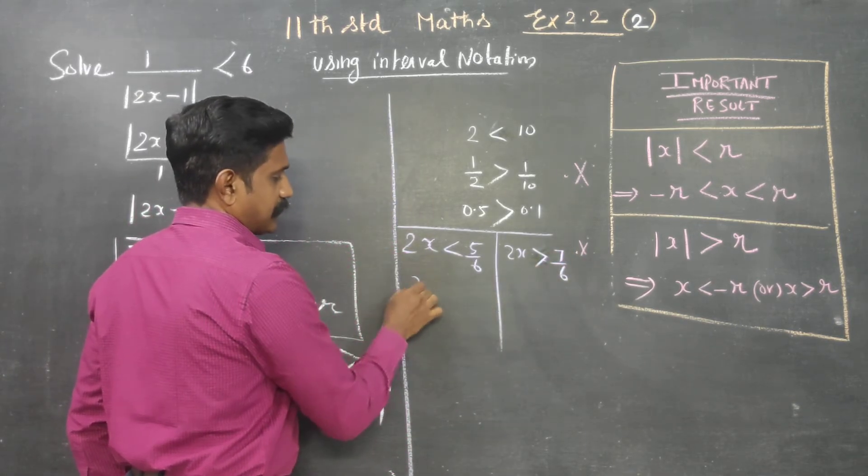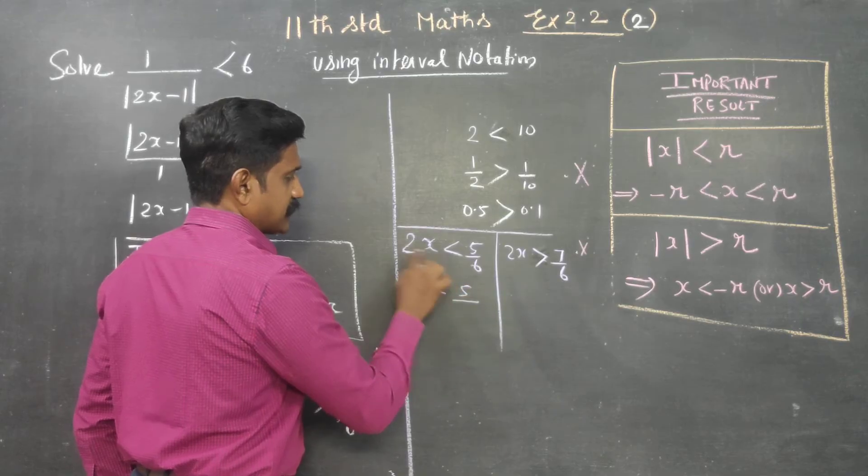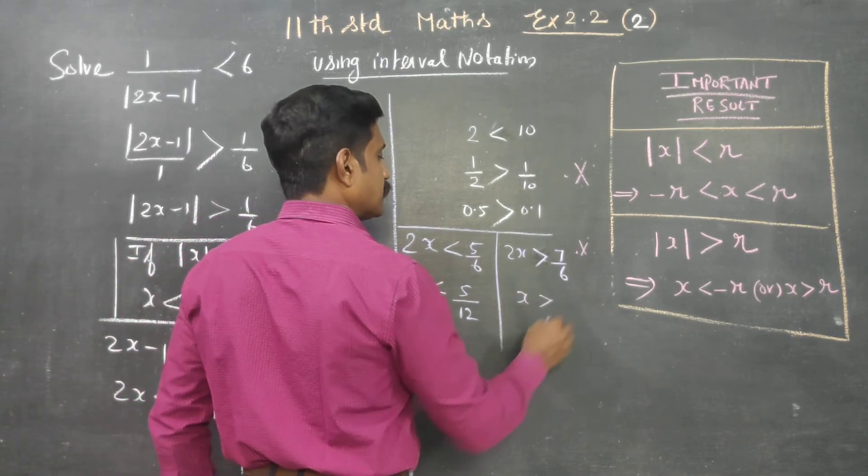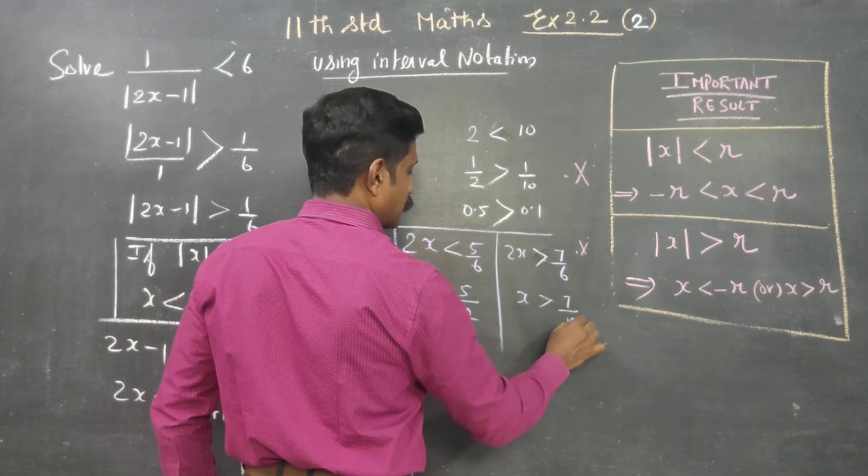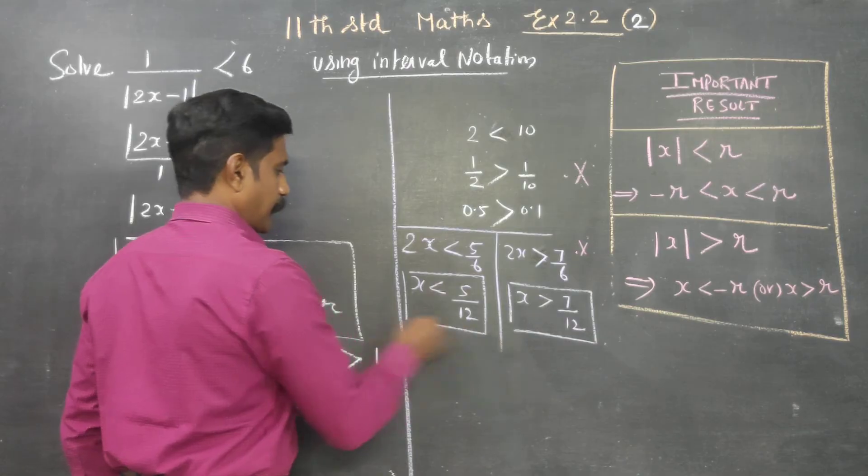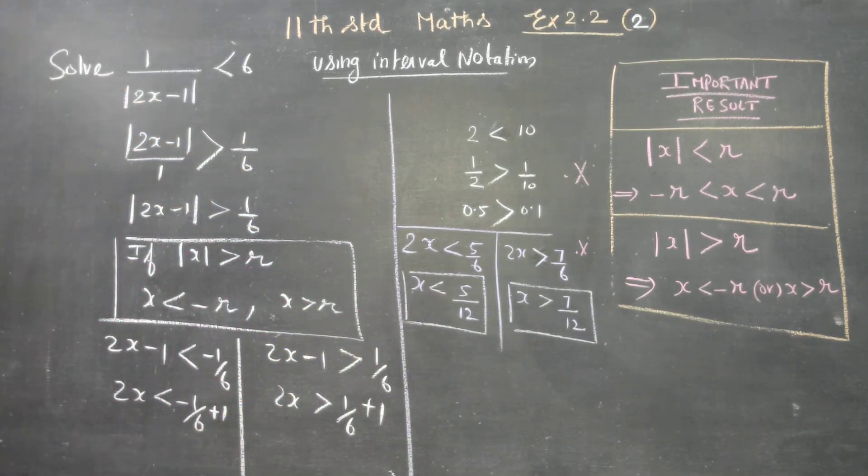Divide by 2 on both sides. x is less than 5 by 6, divided by 2 equals 5 by 12. x is greater than 7 by 6, divided by 2 equals 7 by 12.